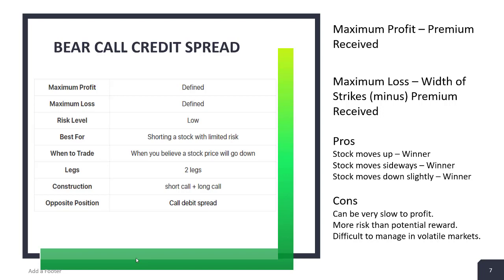To summarize the bear call credit spread: defined risk, defined loss. Maximum profit is the premium received; maximum loss is the width between strikes minus the premium received. Bear call credit spreads are best for shorting stocks with limited risk. Use them when you believe the stock is going down. The opposite position would be a call debit spread.